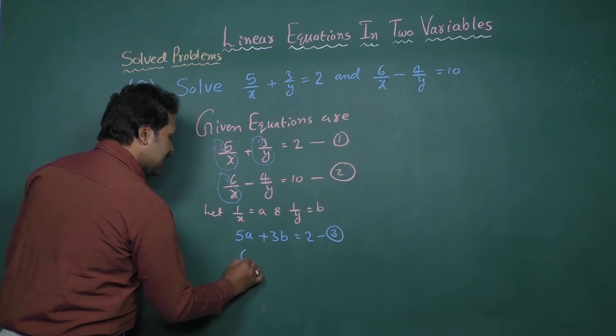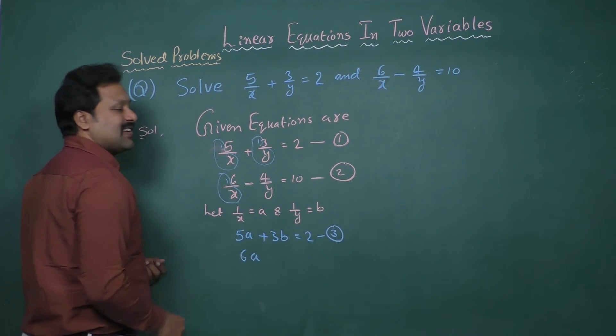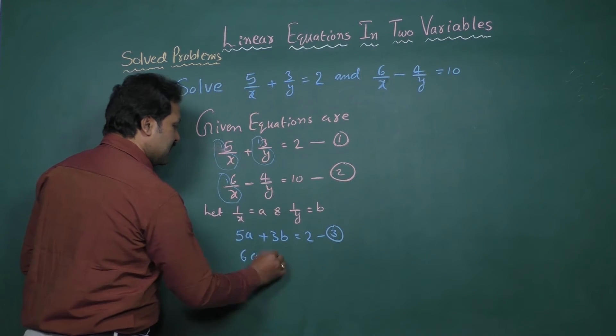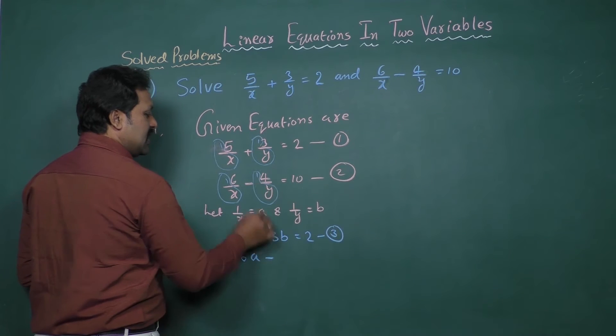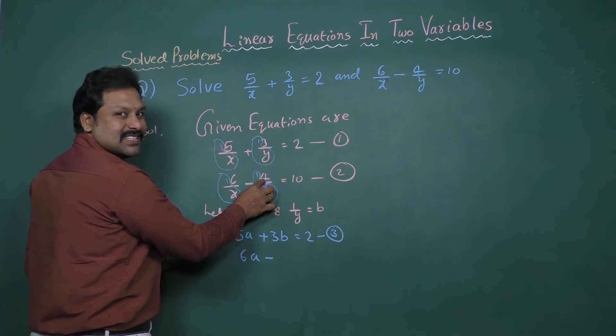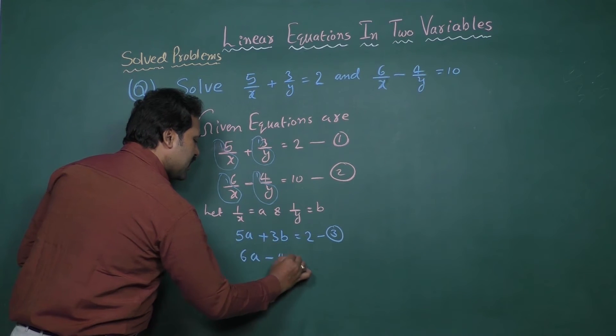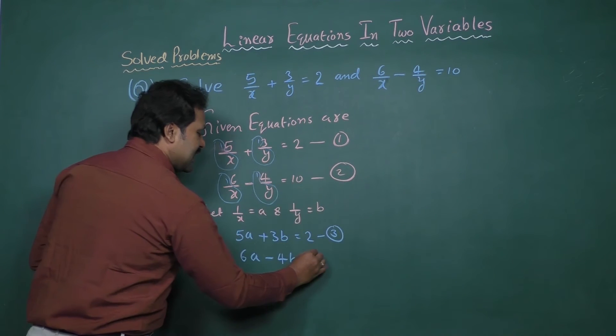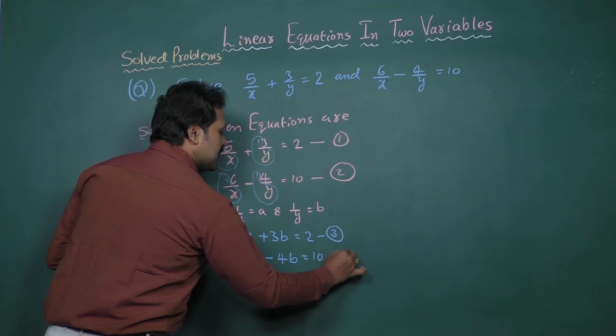That is why 6a minus 4b equal to 10. Let it be equation number 4.